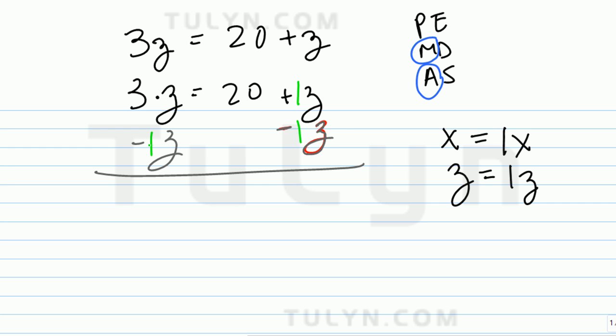Okay, so now it might look a little bit better. So you have 3z minus 1z, right? What would that be? 2z equals, and over here they just cancel out. The positive 1z and negative 1z cancel out. You get 20, right?